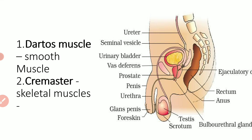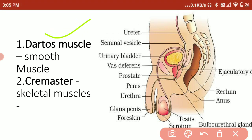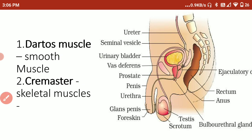The two muscles responsible for keeping the scrotum in position are the dartos muscle and the cremaster muscle. These muscles help facilitate the formation of sperm. The dartos muscle is a smooth muscle and is not under voluntary control, while the cremaster muscle is a skeletal muscle that can be controlled. The cremaster muscle connects the scrotum to the abdominal part.